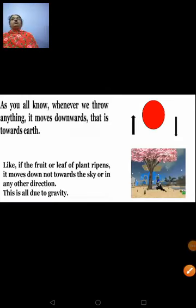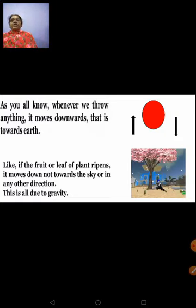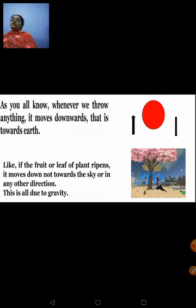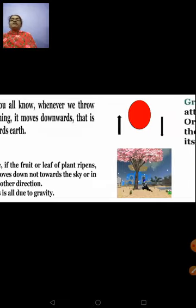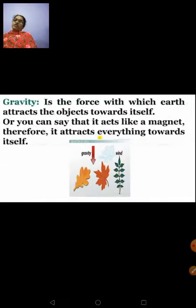We all know that whenever we throw anything upwards, it automatically moves downwards, that is towards the earth. You must have observed a ripened fruit or dried leaves falling off from a tree — it does not move towards the sky or in any other direction. It falls towards the earth's surface only. This is all because of gravity. Gravity is a force with which the earth attracts the objects towards itself.